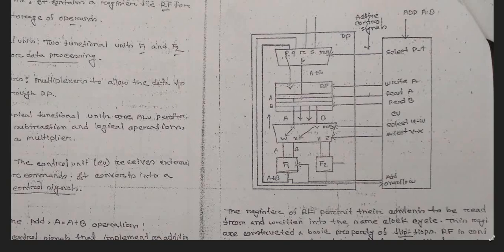In this diagram section we have input from R and S. We generate a value A plus B which is moving to the RF section. In the RF section, write A, read A, and read B are performed. After that the result is moving to the next one. By multiplexing, we are moving this to the F1 section and another to the F2 section. Then the additional overflow is moving to the overflow section and then it is related with the P section and Q section.